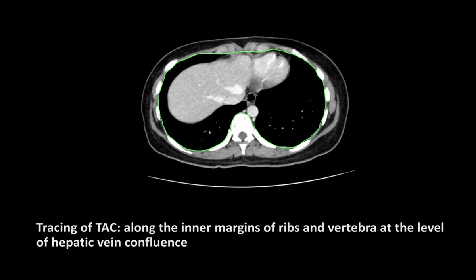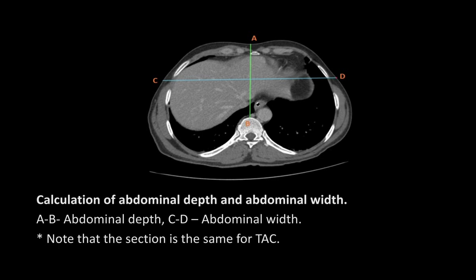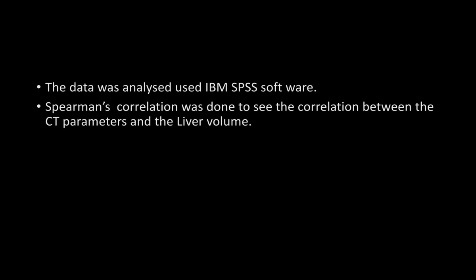The thoracoabdominal circumference was calculated in millimeters by tracing the inner margins of the ribs and the vertebrae at the level of the hepatic venous confluence. The hepatic venous confluence slice was taken as the standard slice to calculate thoracoabdominal circumference, abdominal depth, and abdominal width. Abdominal depth was calculated by a perpendicular line from the anterior margin of the vertebrae to the skin surface. Abdominal width was calculated by a skin-to-skin line perpendicular to the previous line at the midpoint, on the same section.